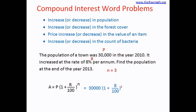Substituting all these values in the formula, it looks like this: 30,000 multiplied by (1 plus 8 over 100) to the power of 3. When you solve this, you will get the answer which will be the population at the end of 2013. I'm not going to solve this further because this is quite easy.